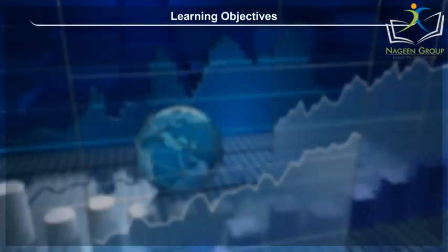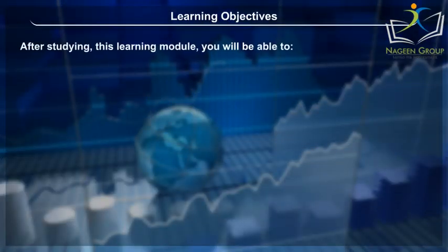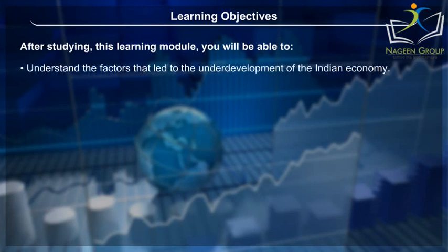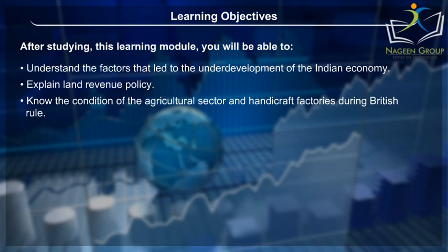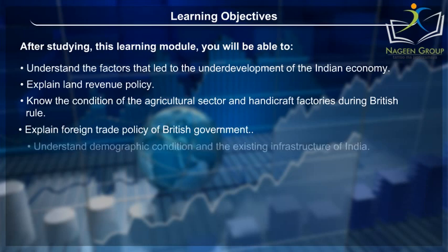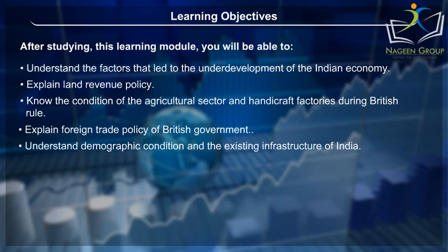Learning Objectives: After studying this learning module, you will be able to understand the factors that led to the underdevelopment of the Indian economy, explain land revenue policy, know the condition of the agricultural sector and handicraft factories during British rule, explain the foreign trade policy of the British government, and understand the demographic condition and existing infrastructure of India.